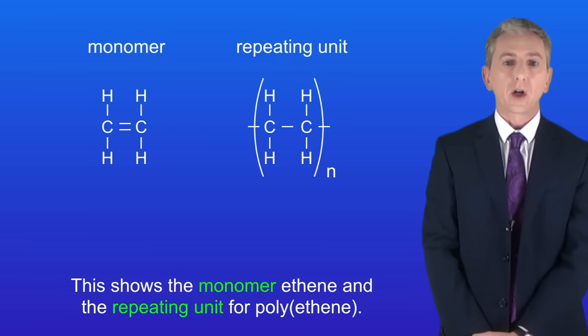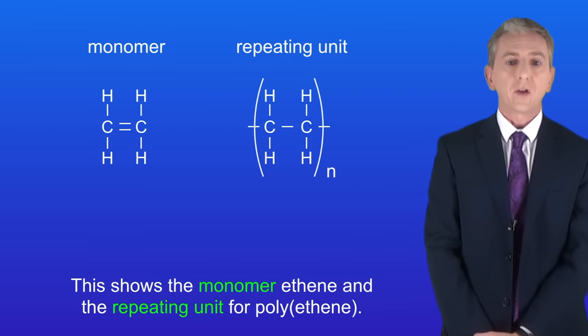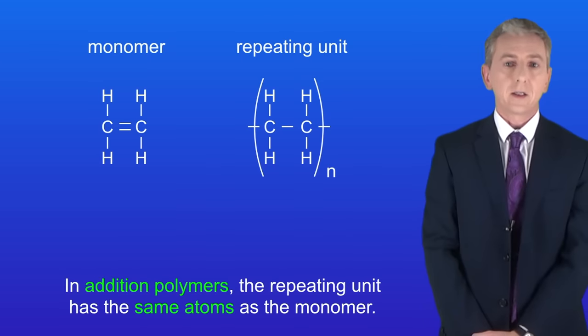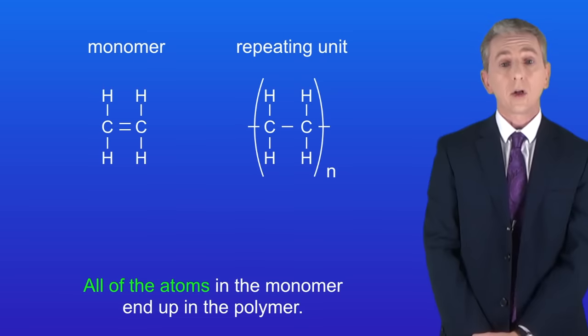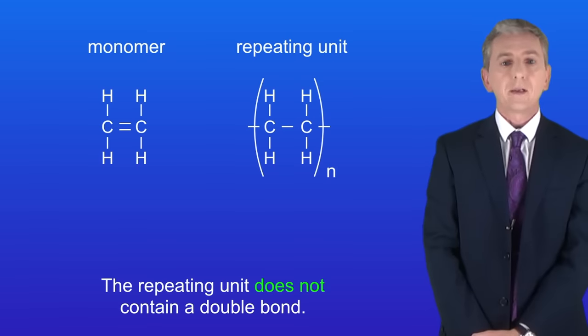Now I'm showing you here the monomer ethene and the repeating unit for polyethene, and this brings us to a couple of important points. Firstly, in addition polymers the repeating unit has the same atoms as the monomer. That's because no other molecules formed in the reaction. In other words, all of the atoms in the monomer end up in the polymer. Secondly, remember that the repeating unit does not contain a double bond.